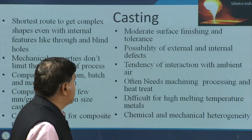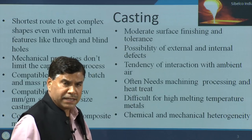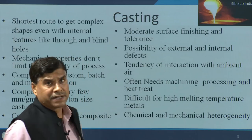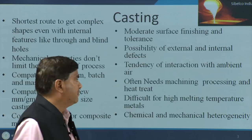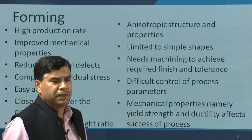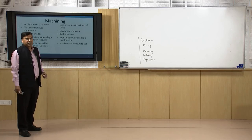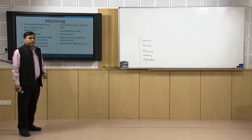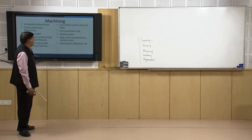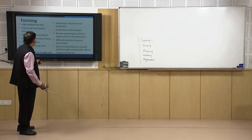At the same time the surface finish achieved by casting is not that good — it requires secondary processing in the form of machining. Tolerance is also not good, and therefore to achieve close control over dimensions and close tolerance of the manufactured product, machining becomes important as per the requirement.